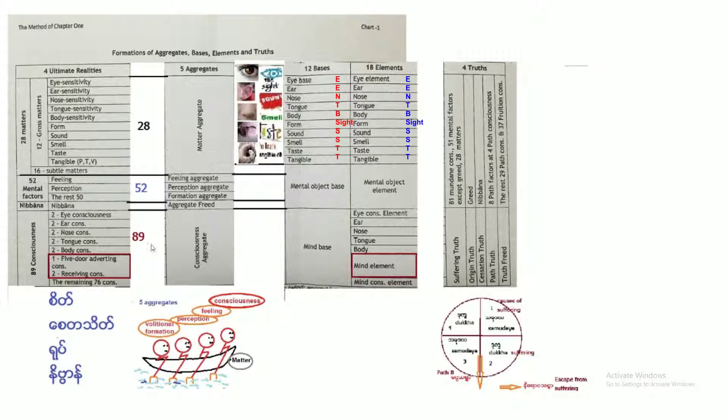All together, eighty-nine consciousnesses in brief. They are classified into the consciousness aggregate.